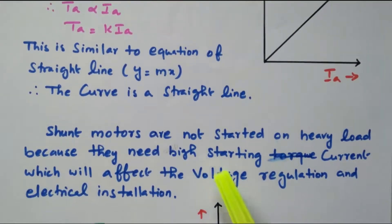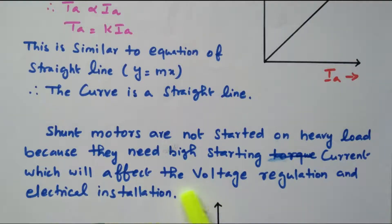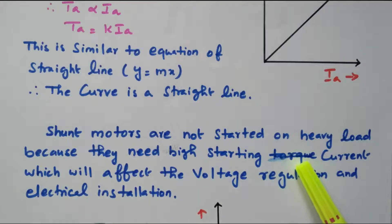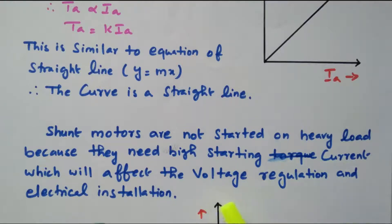Shunt motors are not started on heavy load, because they need a high starting current which will affect the voltage regulation and the electrical installation. So the shunt motors are not started with heavy load. After starting, the load can be gradually increased. Otherwise, it will take a large amount of current that will affect the voltage regulation as well as the electrical installation. But series motors can be started with loaded condition.